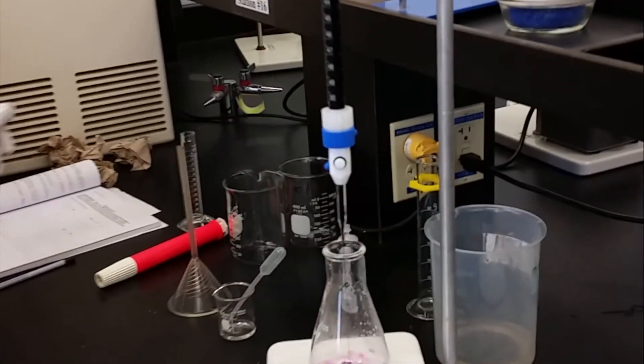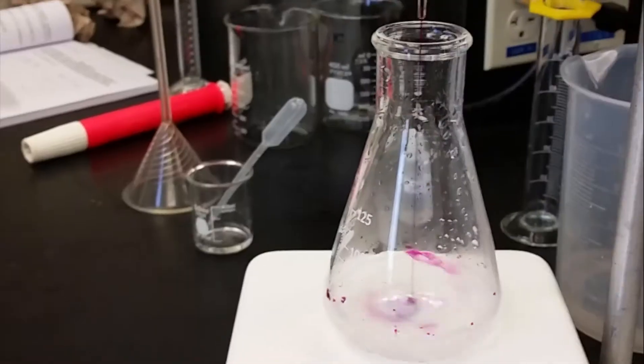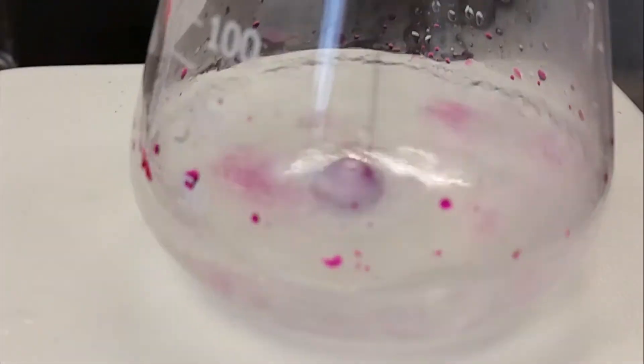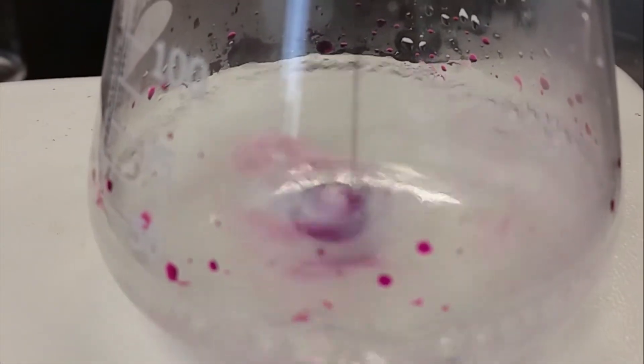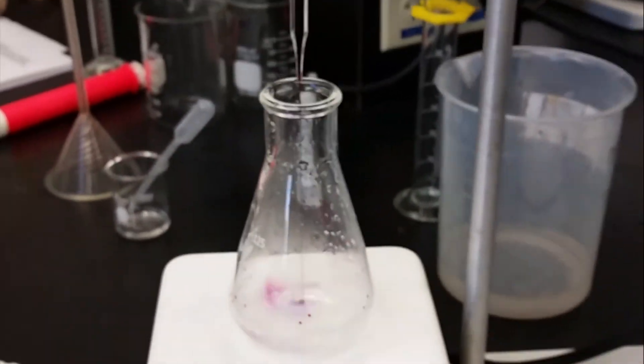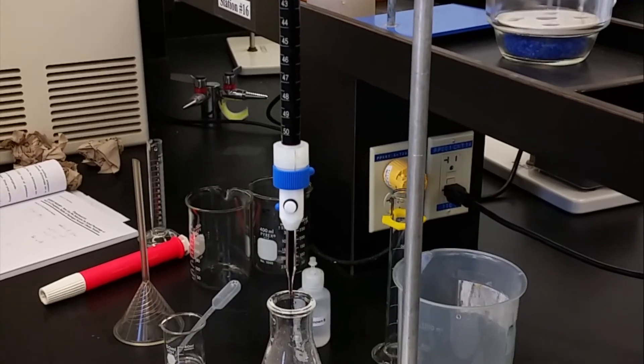As you can see, the potassium permanganate which has a dark purple color is used as a titrant and therefore it's filled in the burette. The hydrogen peroxide solution which is colorless is in the Erlenmeyer flask.